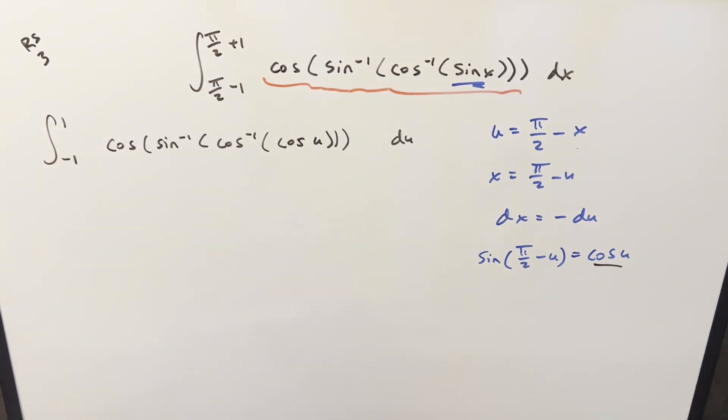And then what we can notice here is this is actually an even function because if you plug in minus u here, cosine of minus u, cosine is an even function so you just get back cosine u. So with symmetric bounds, we can use the principle of even functions. Change the lower bound to 0 and we just need to bring a 2 up front.